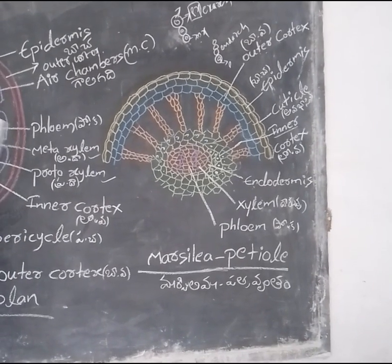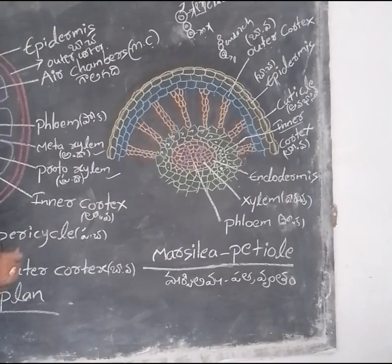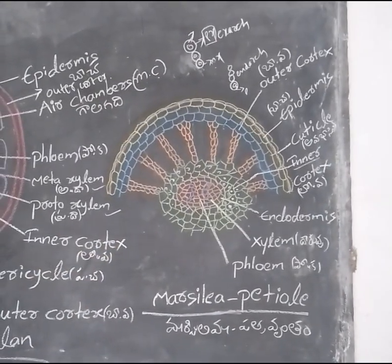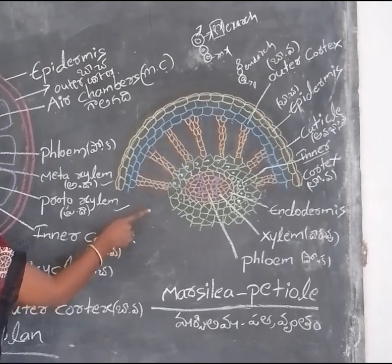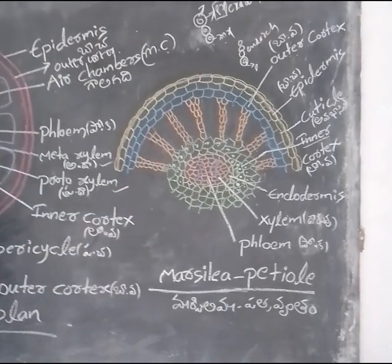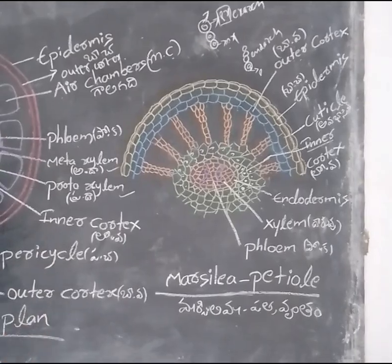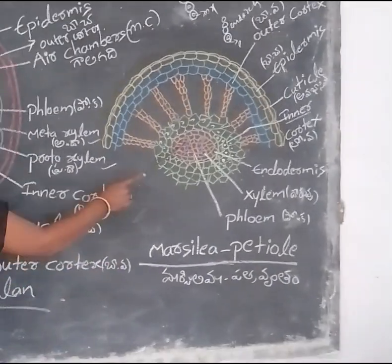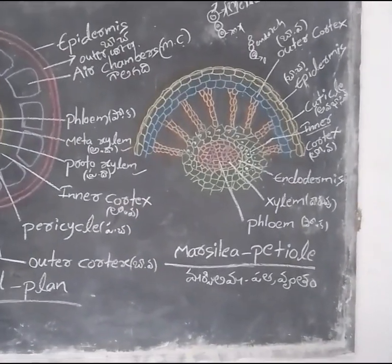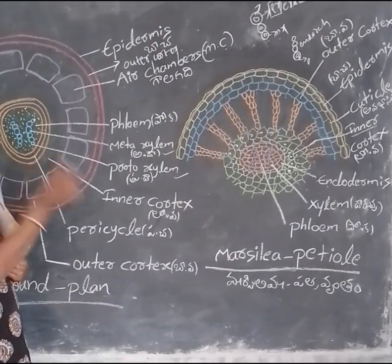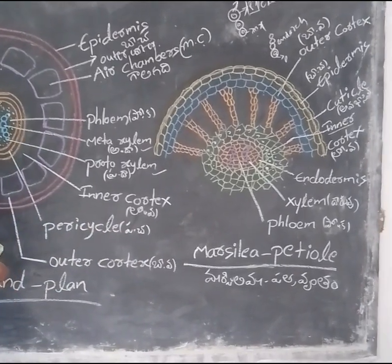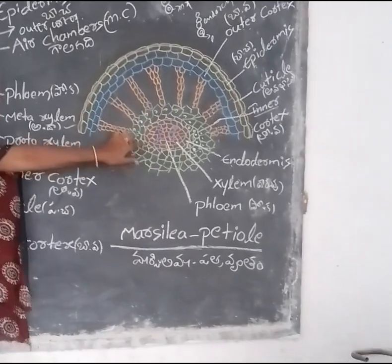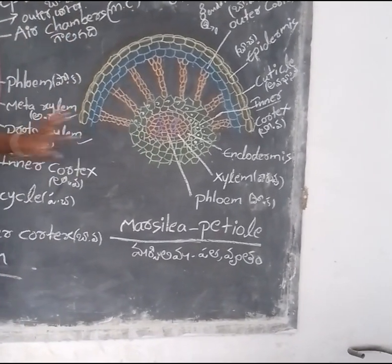Below the inner Cortex, endodermal tissue is present, made up of parenchyma tissue. Below the endodermis, pericycle is present — one layer of parenchyma tissue. In this, xylem and phloem are present. Here xylem is diarch — diarch means xylem is present on both sides.